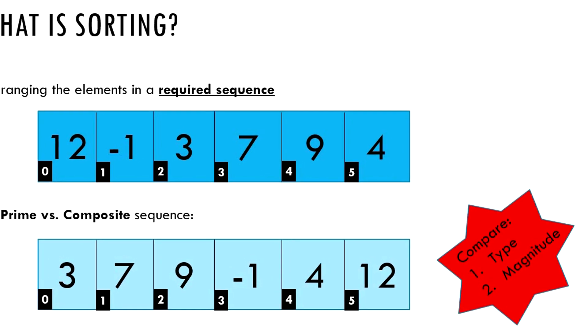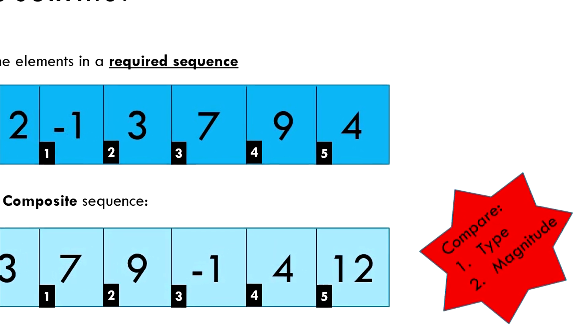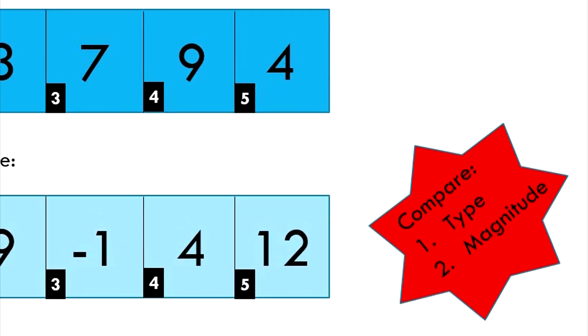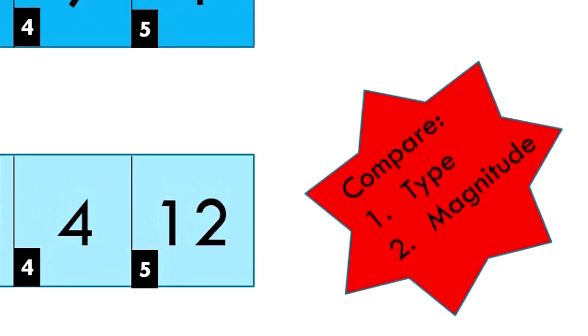Here, the primary sorting criteria is the type of the number, which is either prime or composite. Then, the secondary sorting criteria is the magnitude of the number.